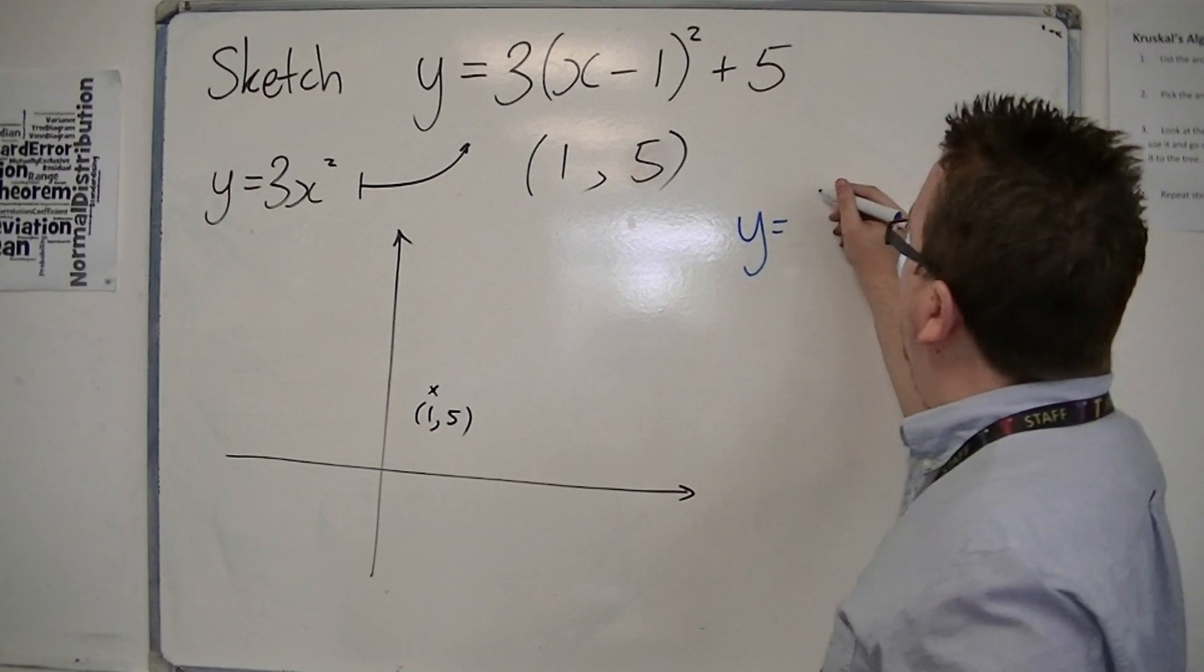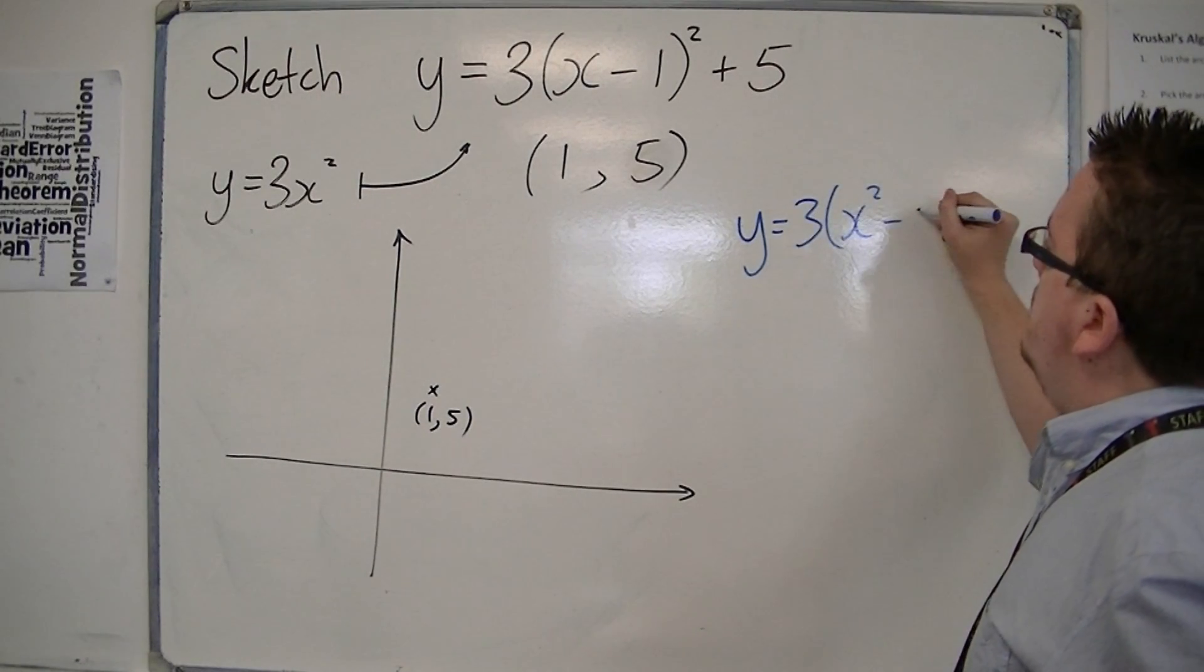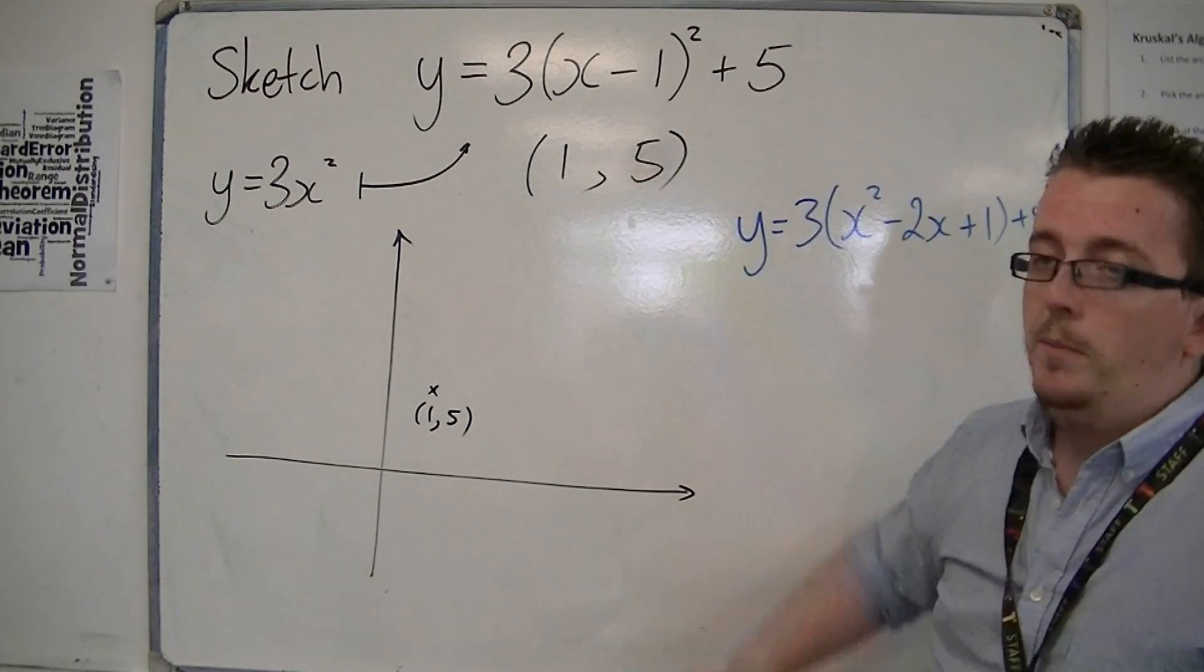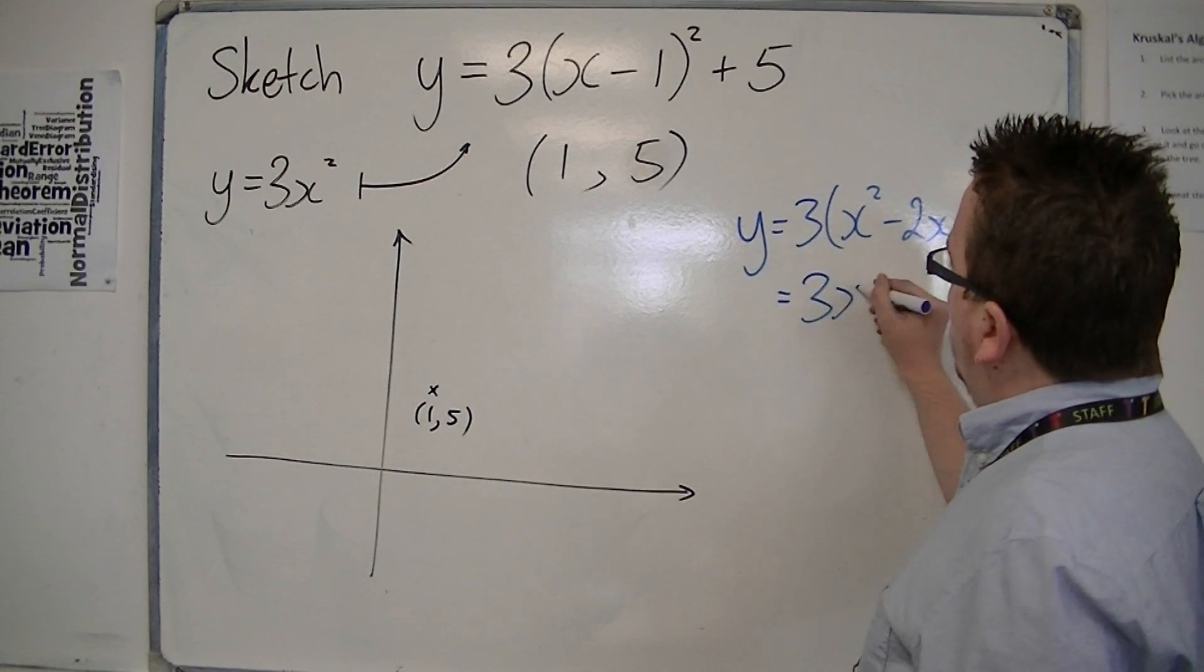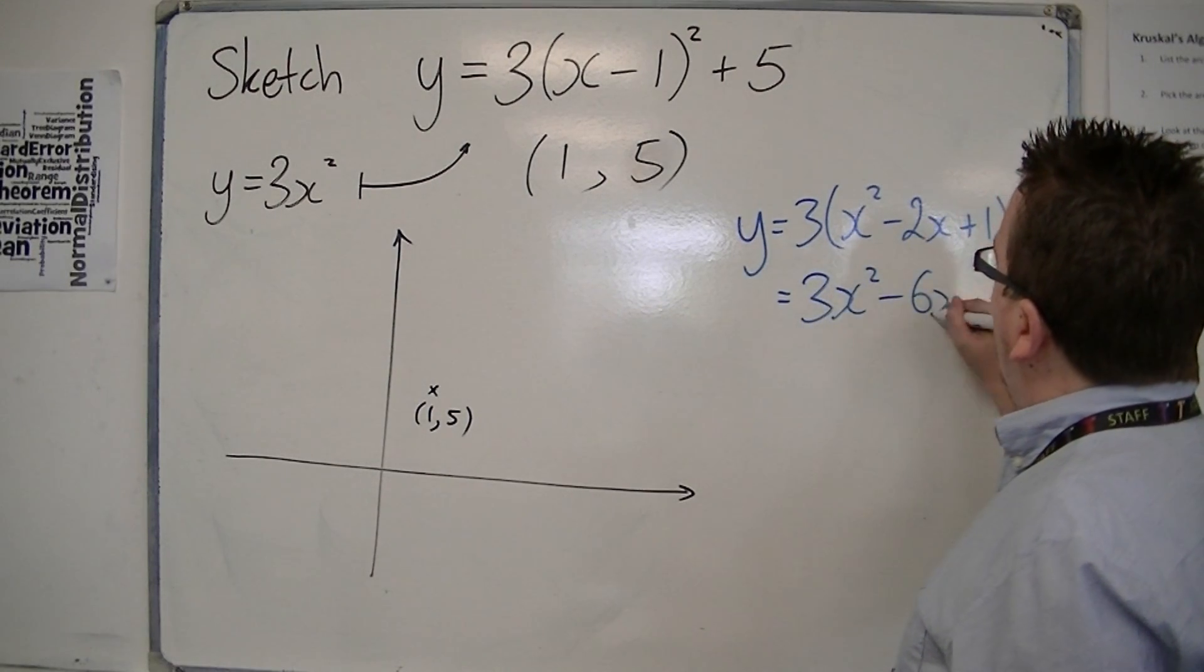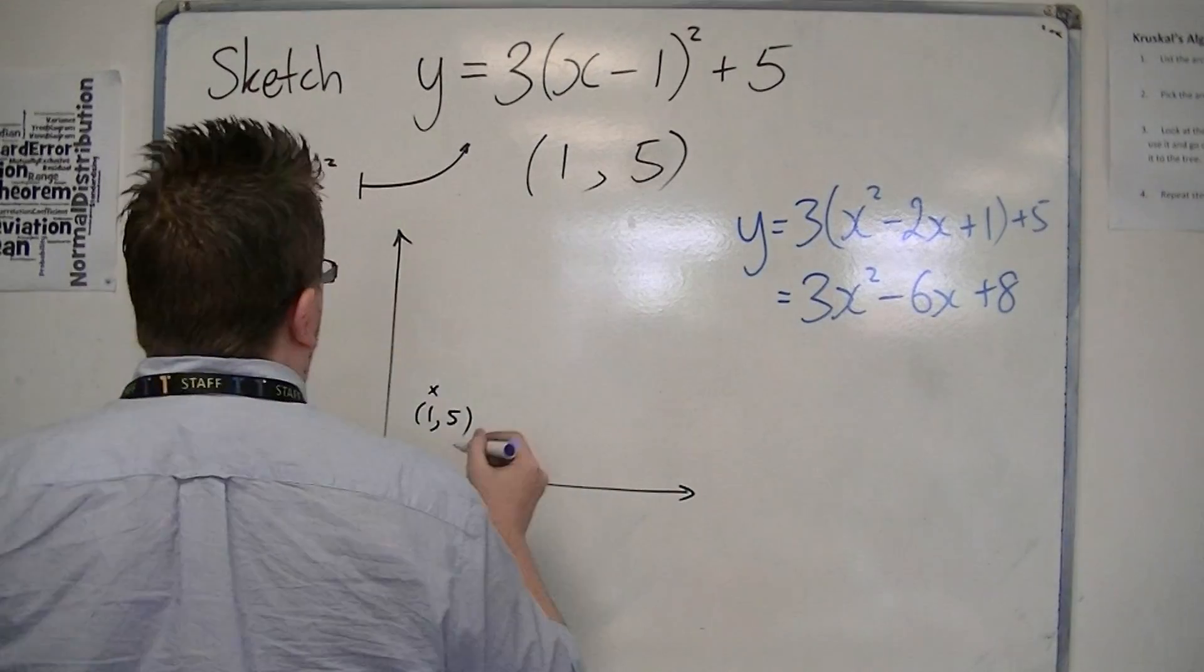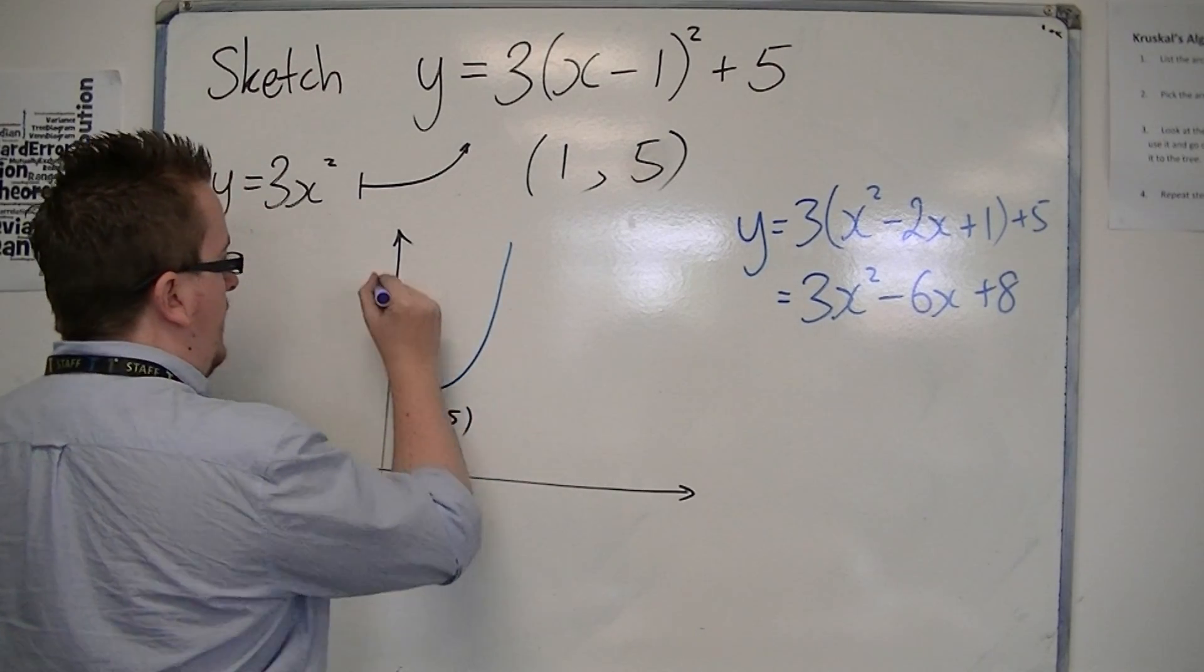So, y is equal to, well, I'm going to leave the 3 there for the moment. We've got x squared minus 2x plus 1, when we multiply out x minus 1 all squared. So I'm going to have 3x squared minus 6x, 3 times 1 is 3, plus 5 is 8. So it crosses the y-axis at 8. So it is a curve that looks something like this.